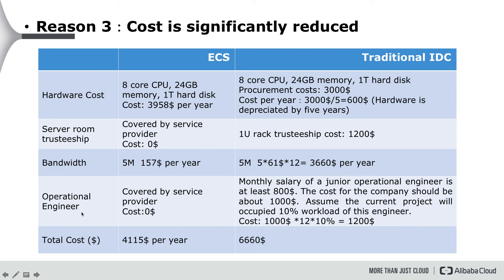For operational engineer cost: a monthly salary for a junior operational engineer is at least $800, and including social insurance the company cost is about $1,000 per month. Assuming the project occupies 10% of the engineer's workload, that's $1,200 per year. With ECS, since the web UI console handles most common operational tasks easily, no operational engineer is needed. After a quick calculation, the total cost for ECS is $4,150, while the cost for a traditional IDC is $6,600. You can see the cost is significantly reduced when using ECS.